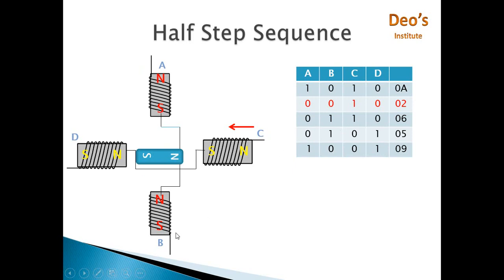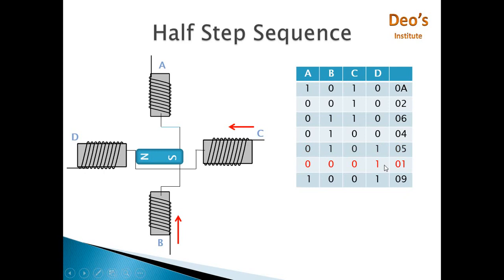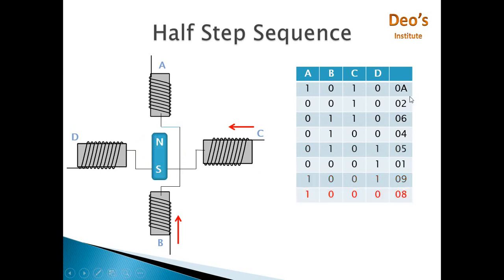In the next step we make both C and B on again, then we disconnect C and apply only B — all zeros except B is 1. Then B and D are on, then only D is on, then A and D are on, and finally only A is on. This is the half step sequence: in each step the rotor rotates through 45 degrees and 8 steps are required for a complete rotation.